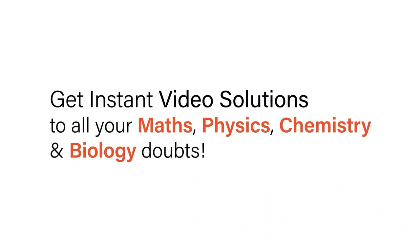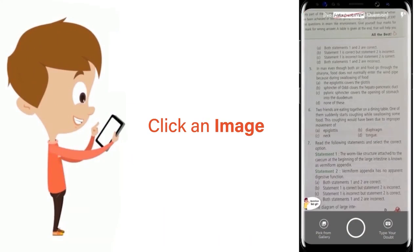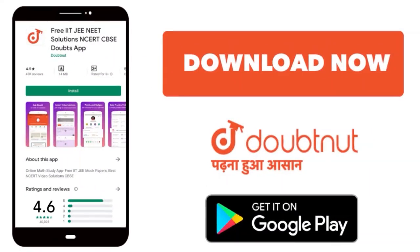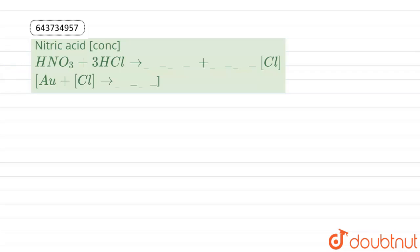With Doubtnet, get instant video solutions to all your maths, physics, chemistry, and biology doubts. Just click the image of the question, crop the question, and get instant video solution. Download Doubtnet app today. Hello everyone, today's question is: fill in the blank. When one mole of nitric acid reacts with three mole of HCl to give products with nascent